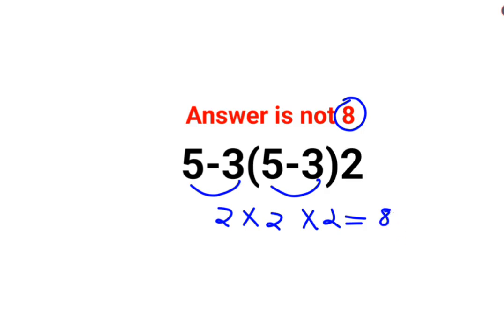The answer for this one is supposed to be 8? No, this could have been right if this question had a bracket for 5 minus 3 as well. But here we have just one 5 minus 3 under a bracket.